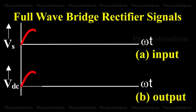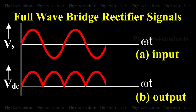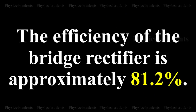The output signal corresponding to the input signal is shown in the animation. The efficiency of the bridge rectifier is approximately 81.2%.